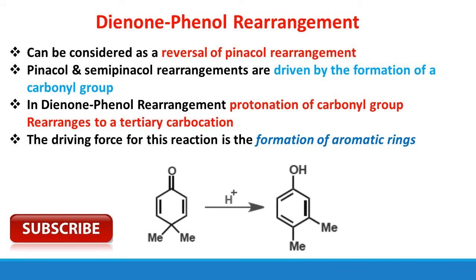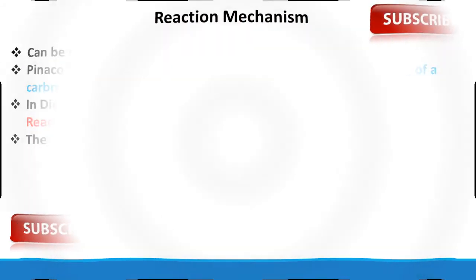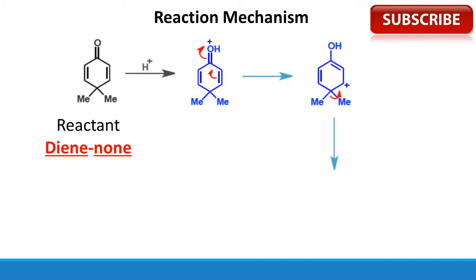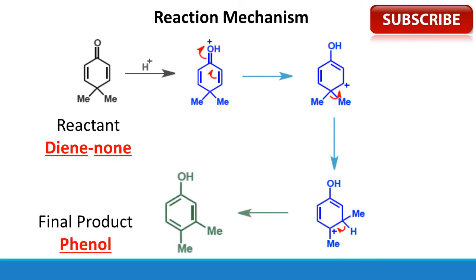See the reaction below. First of all, protonation of the carbonyl group takes place. The double bond extends to this group. Methyl migration takes place and the rearrangement product Phenol is formed. See the mechanism here — the reactant is Dienone. After protonation, it rearranges. Methyl migration takes place, and the final step is aromatization to form the final product.